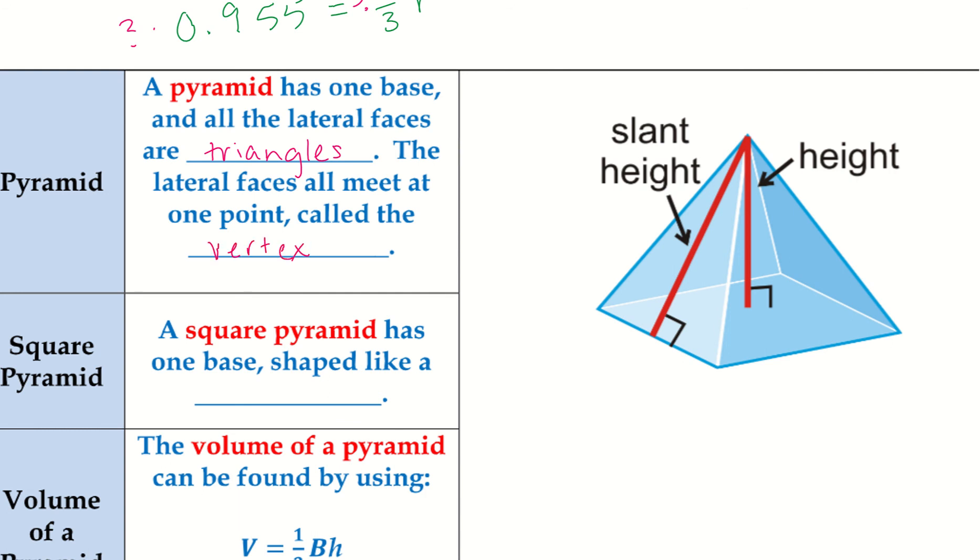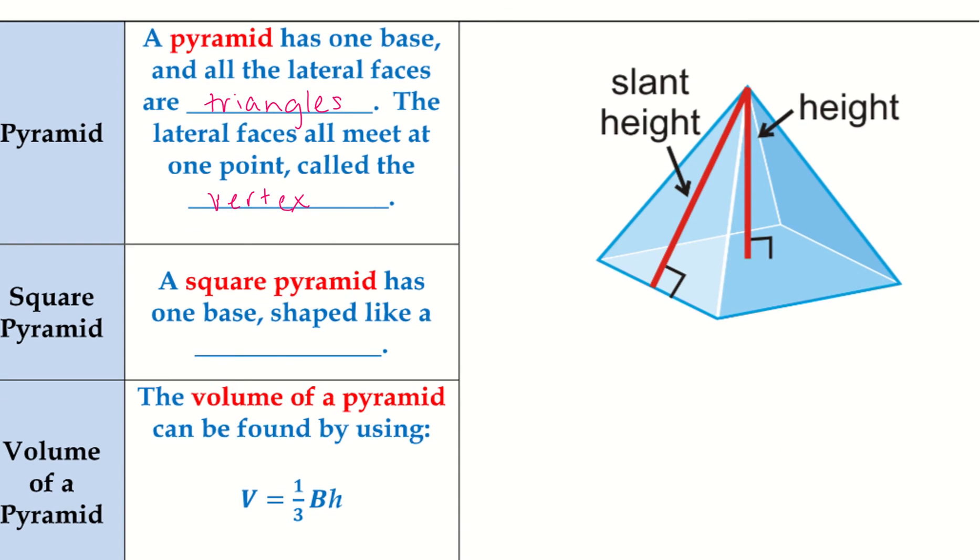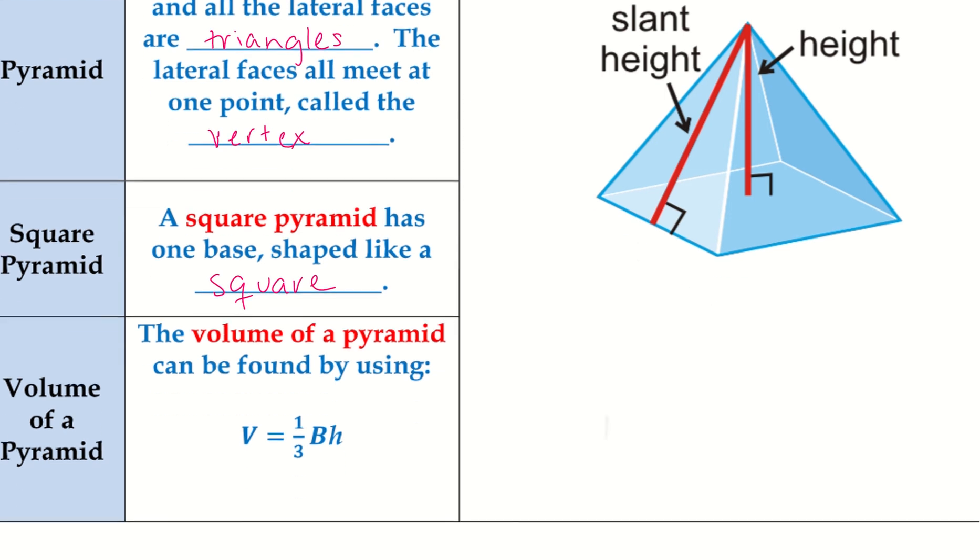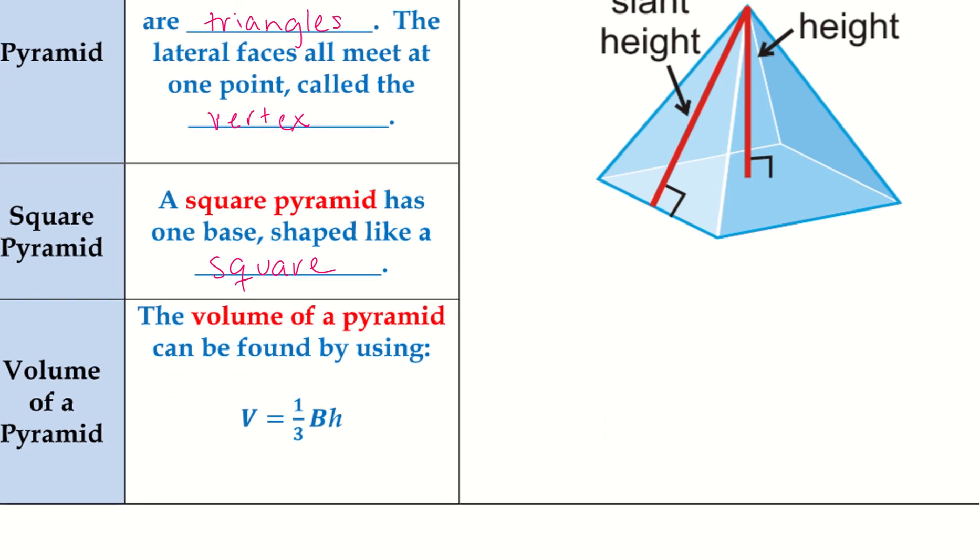A square pyramid has one base shaped like a square. The volume of a pyramid can be found by using the volume equals one-third times big B times H. Remember, this big B is area of base.